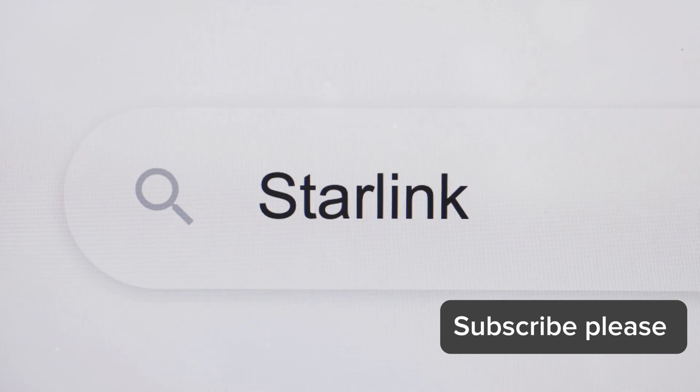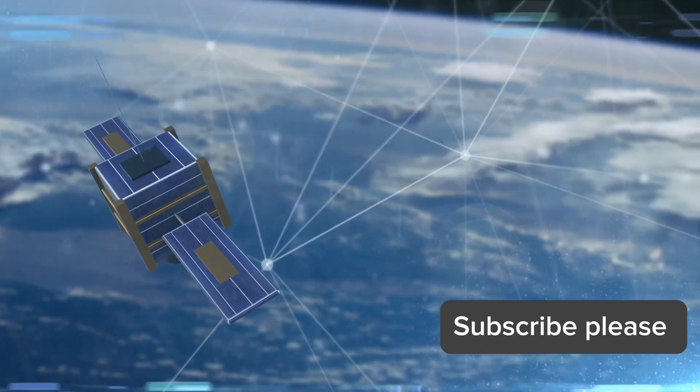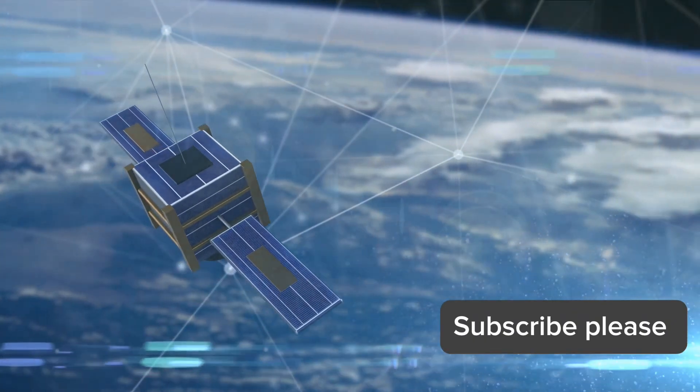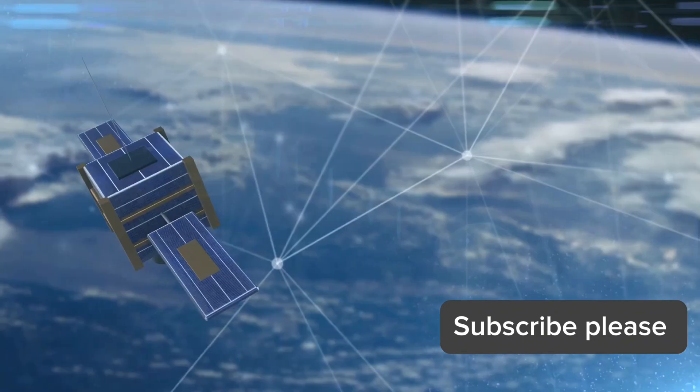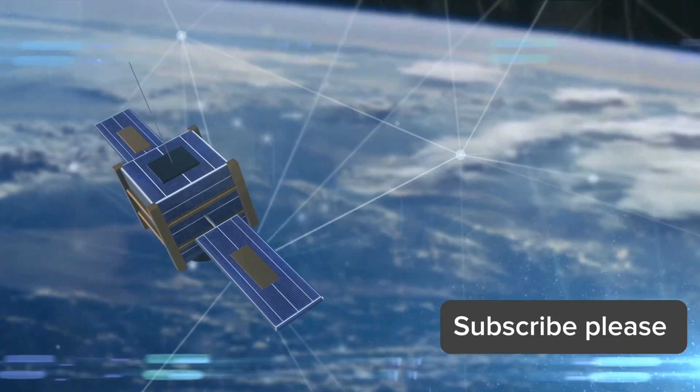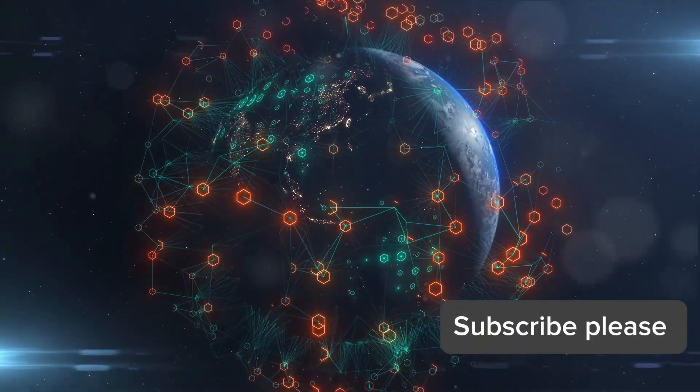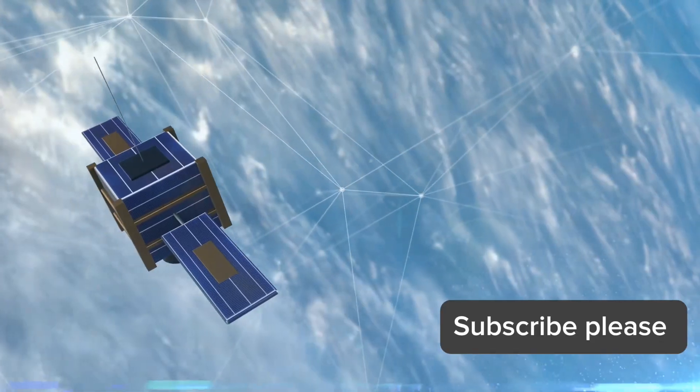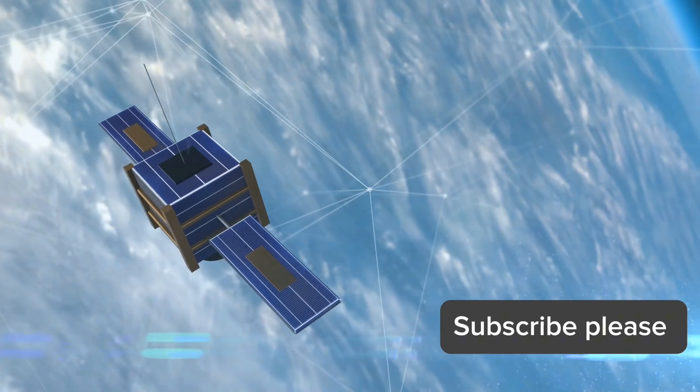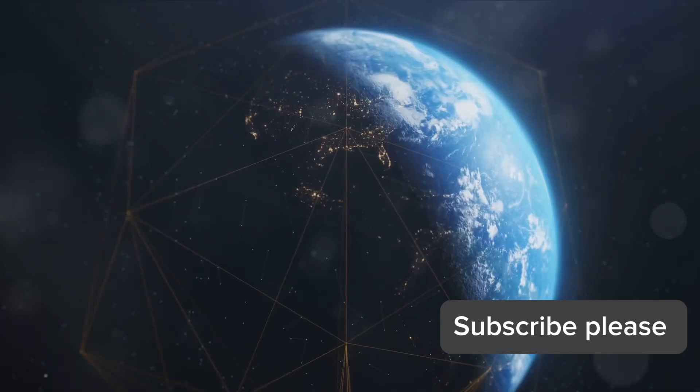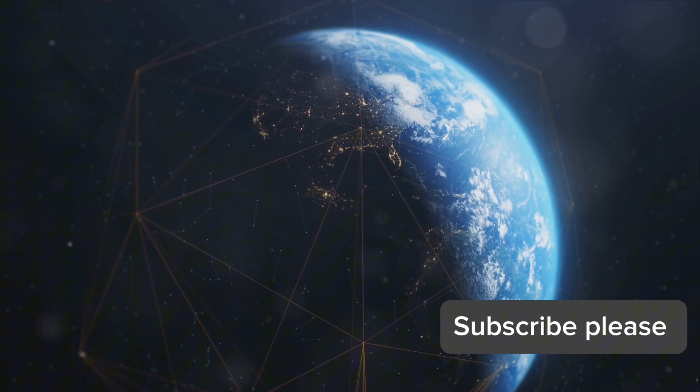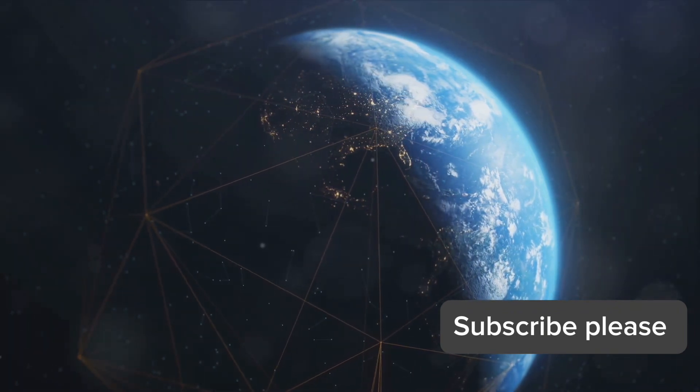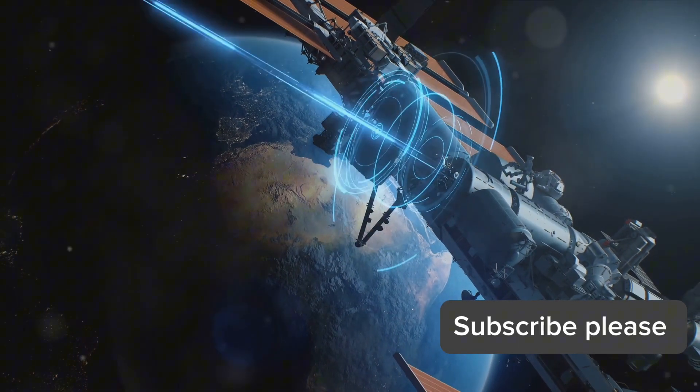When you're browsing the web or streaming your favorite show, the user terminal sends a request to the nearest Starlink satellite. This satellite then relays your request to the appropriate ground station, which routes it to the internet backbone. In return, the requested data is sent from the internet backbone through the ground stations and back to the satellite before finally reaching your user terminal.